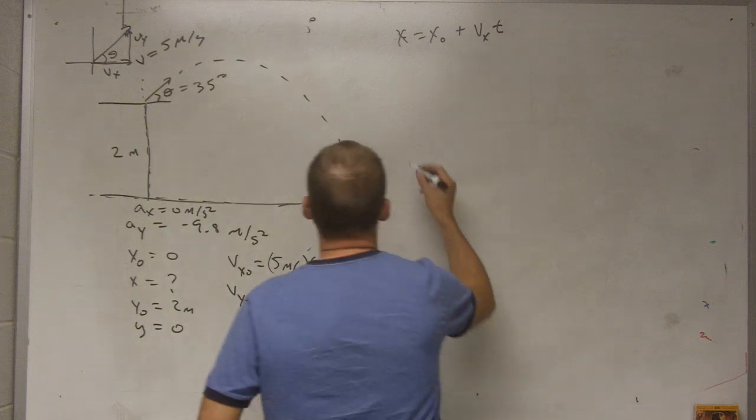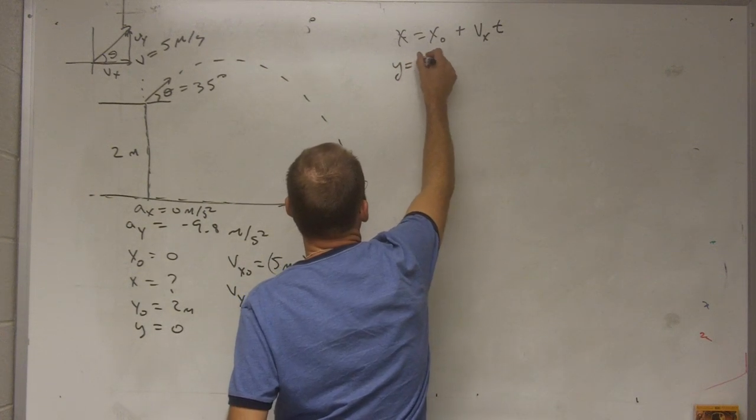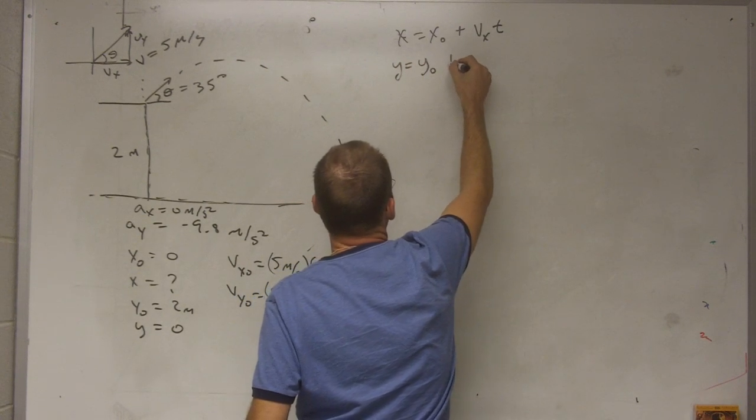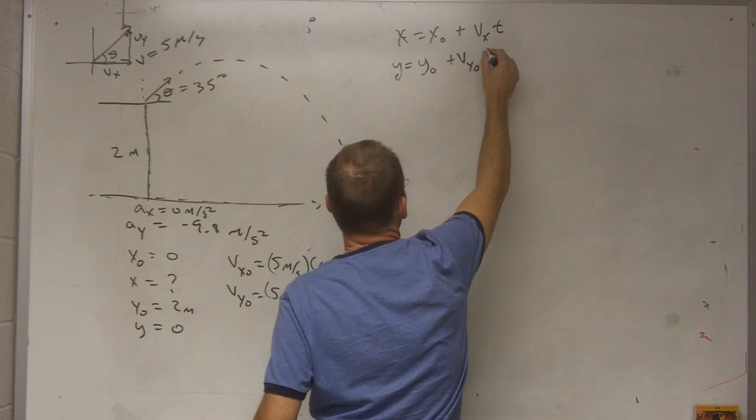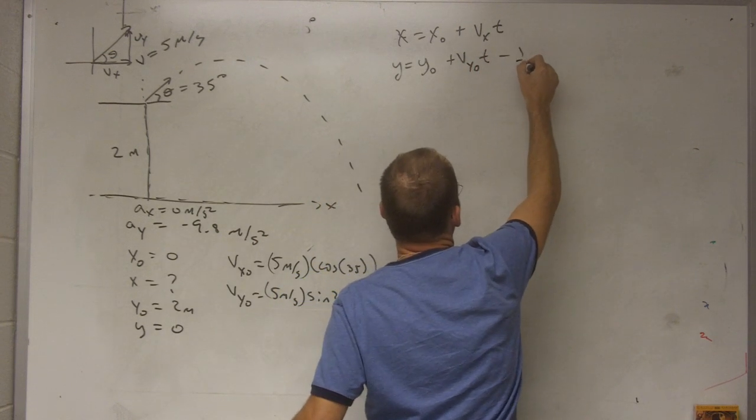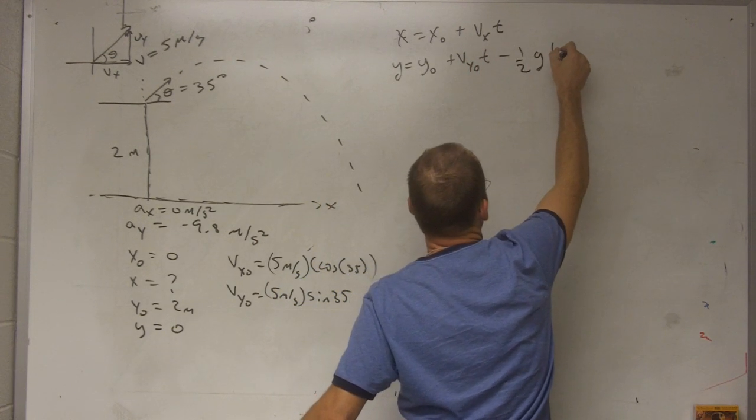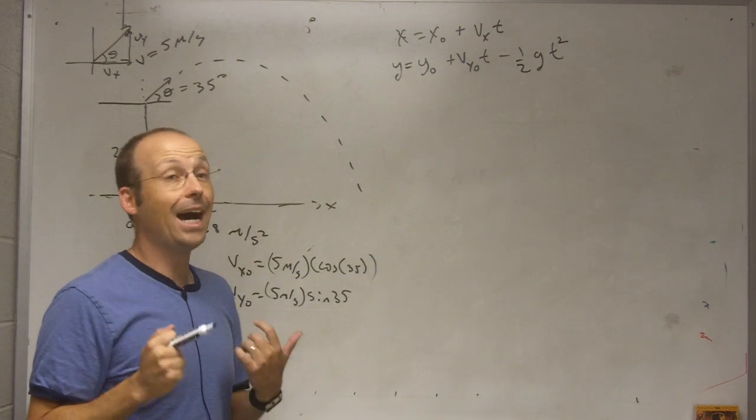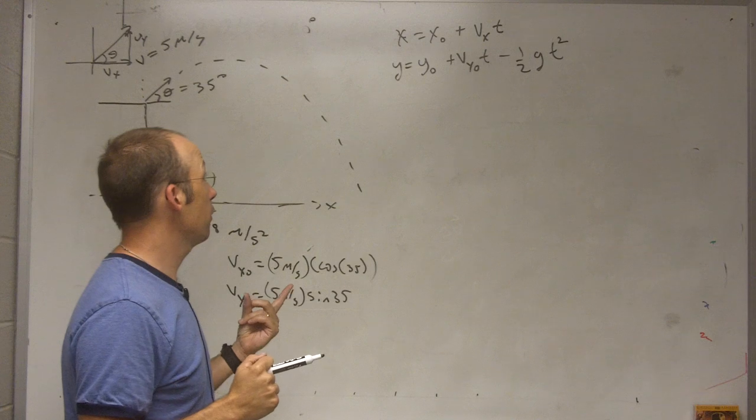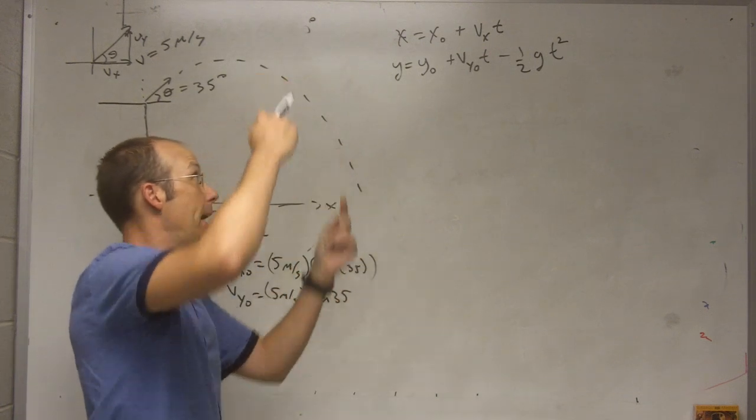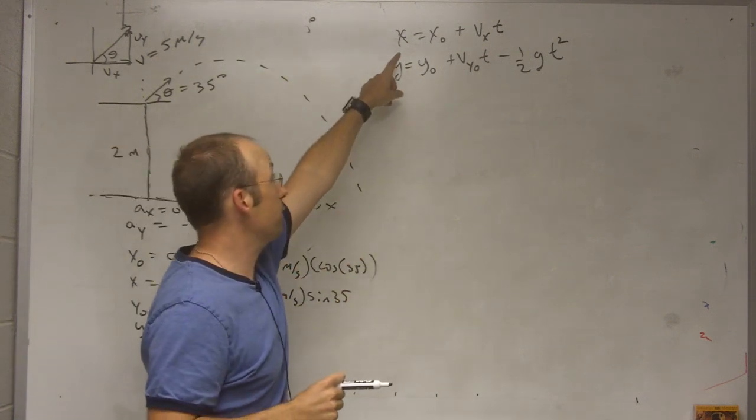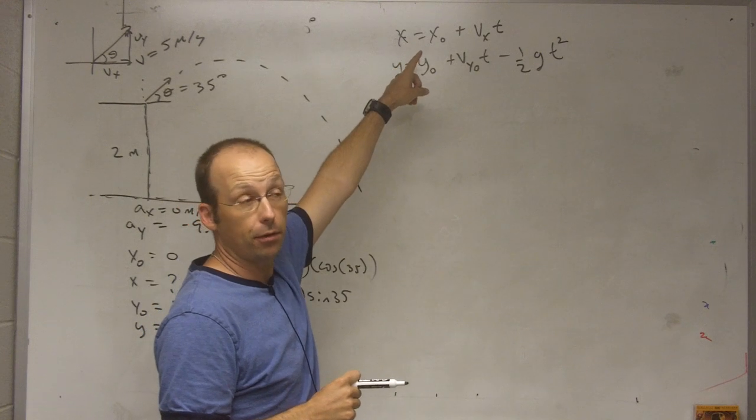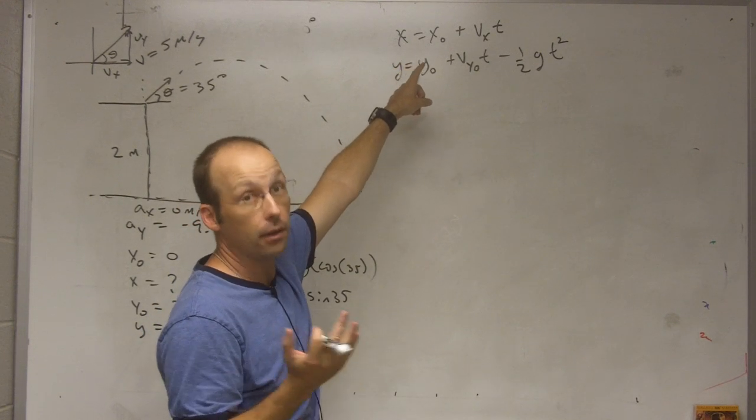Okay, what about the y direction? Well, here I know y equals y0 plus vy0t minus 1 half gt squared. So can I use this to find the time and then put that back into the x direction to find the displacement or where it lands?